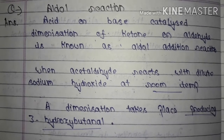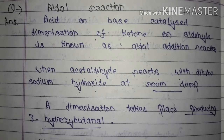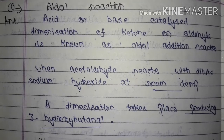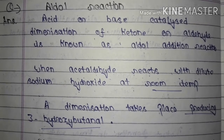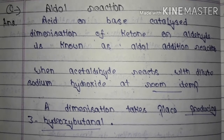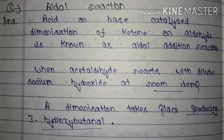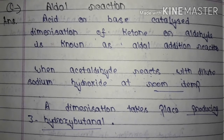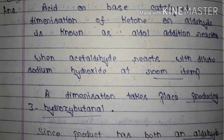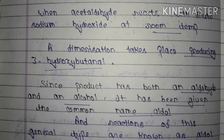Acid or base catalyzed dimerization of a ketone or aldehyde is known as the aldol addition reaction. That is, the dimerization of either a ketone or an aldehyde, which is catalyzed by an acid or a base, is what we call the aldol addition reaction. You can find this in short or long answers.